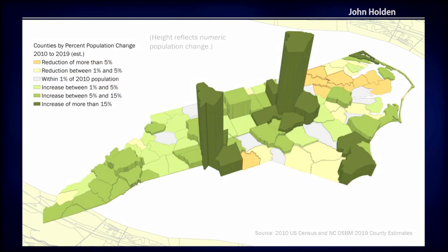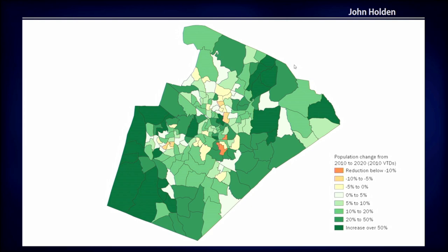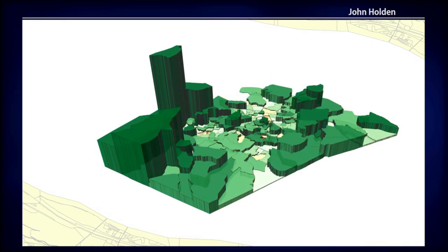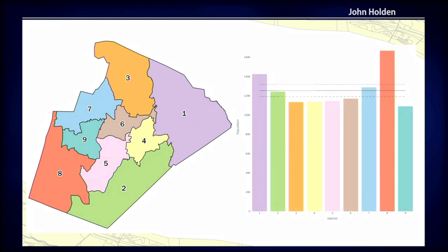I alluded earlier to the city of Raleigh, which is in Wake County. Other examples will be focused on that county. It had more than 20% growth. Each of the polygons here has a roughly equal population — these are all voting districts — and you can see it's unevenly distributed across the county. The colors represent percentages, but the height of the prisms represents magnitudes. Working for Wake County, I had the challenge of taking their existing nine districts for a countywide board. The solid line here is the ideal population — the population of the whole county divided by nine. The dotted and dashed lines represent the upper and lower limits of plus or minus 5%. We had to redraw the districts to get all populations within that acceptable deviation.